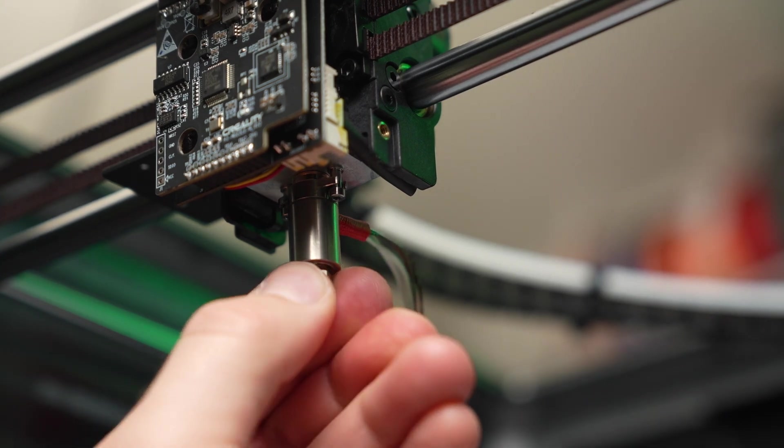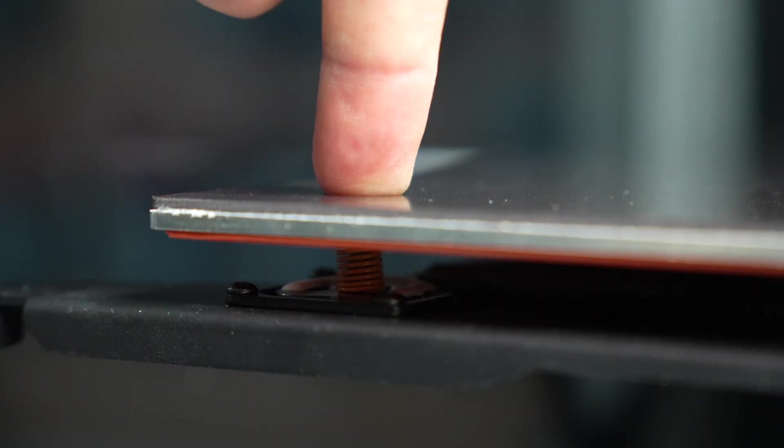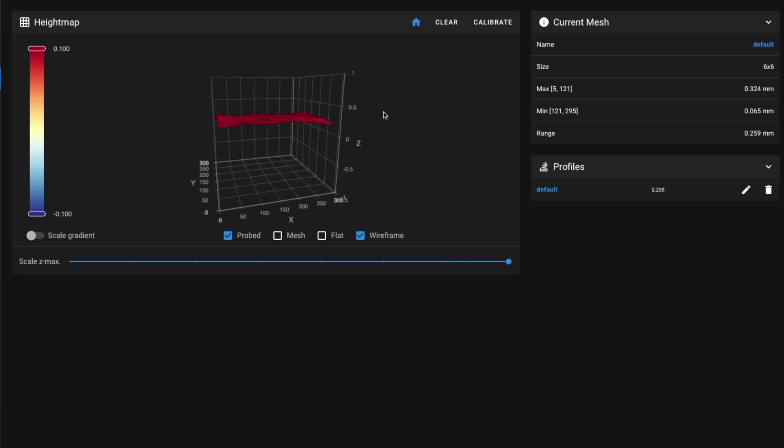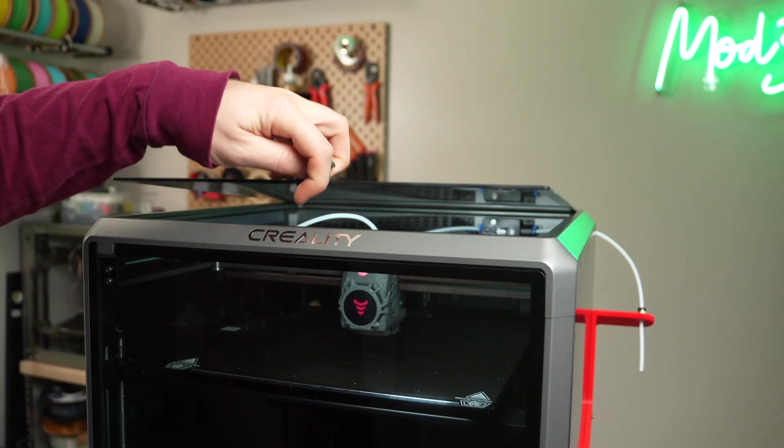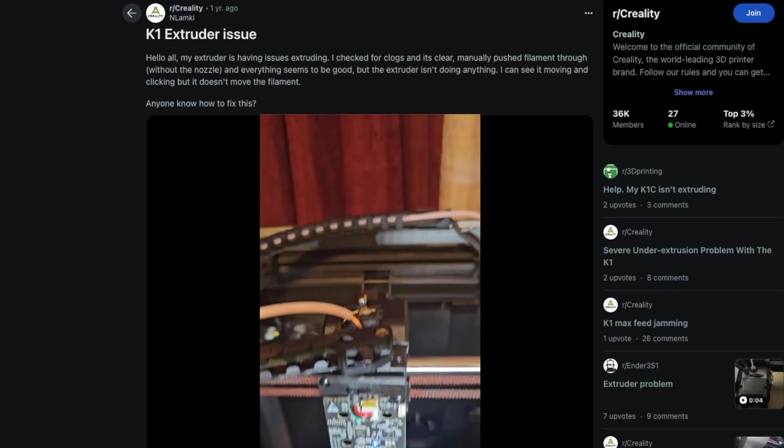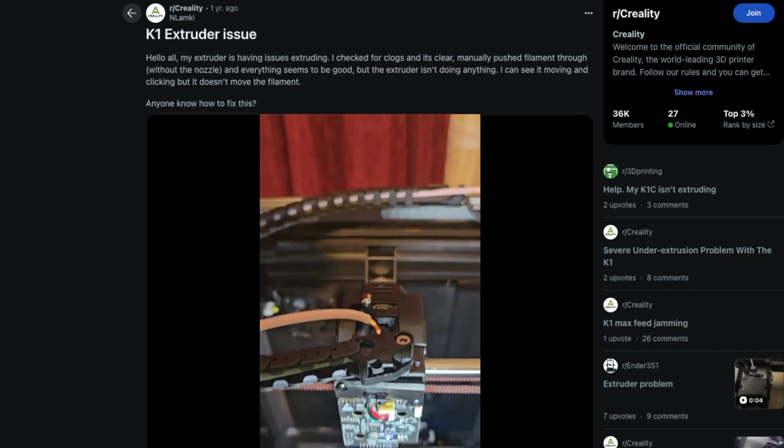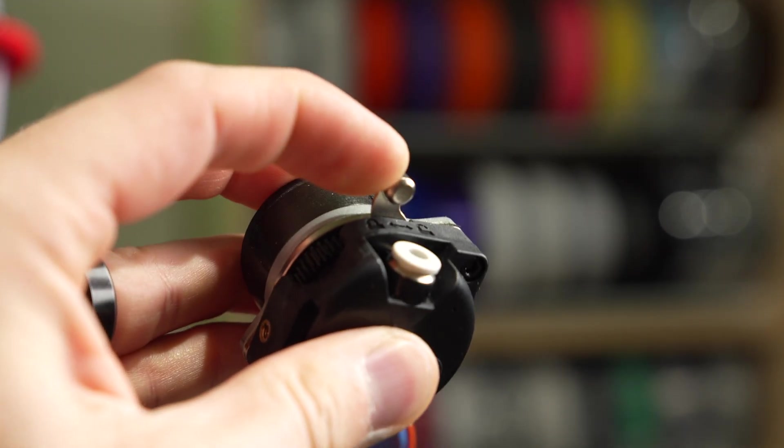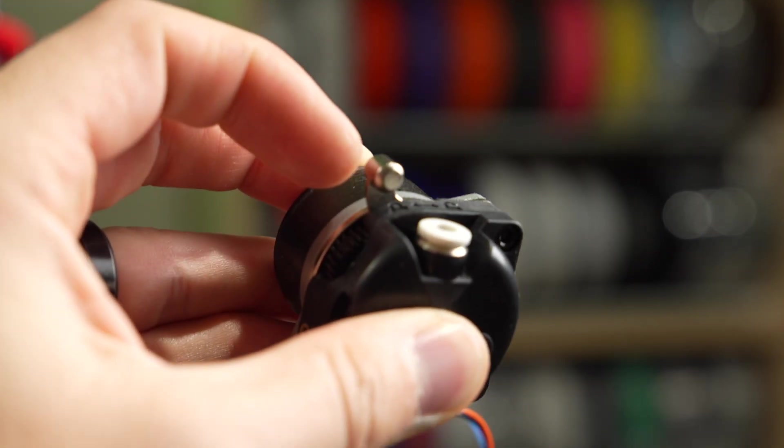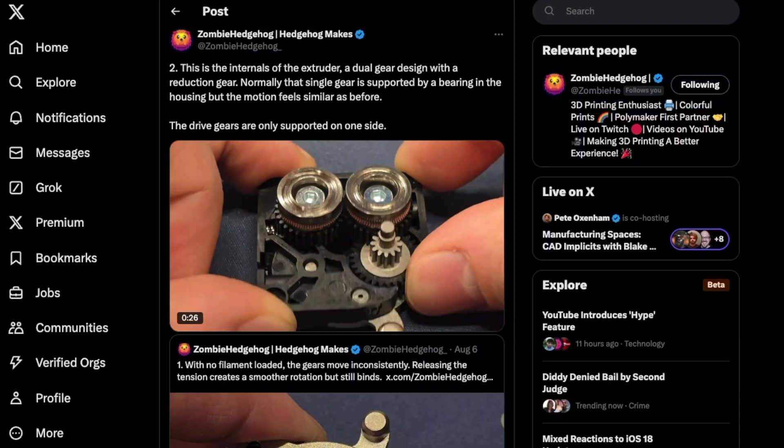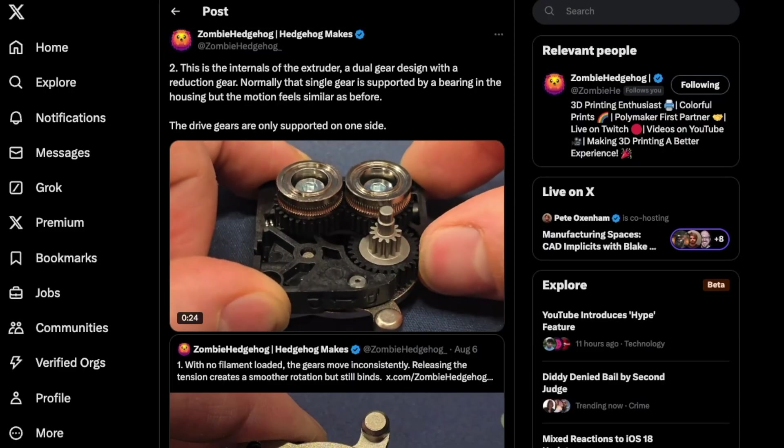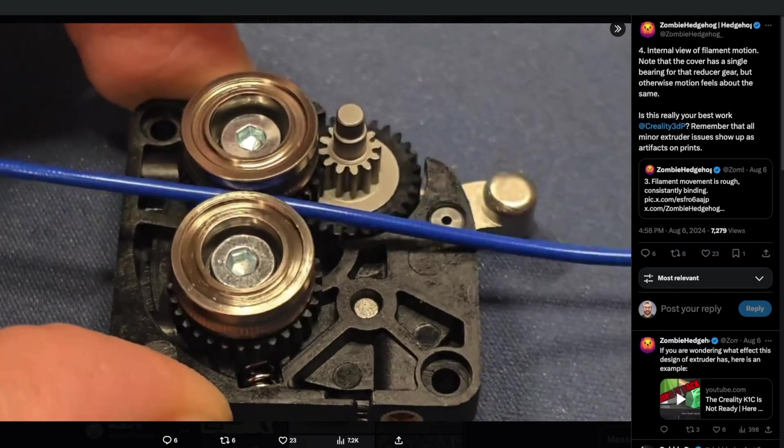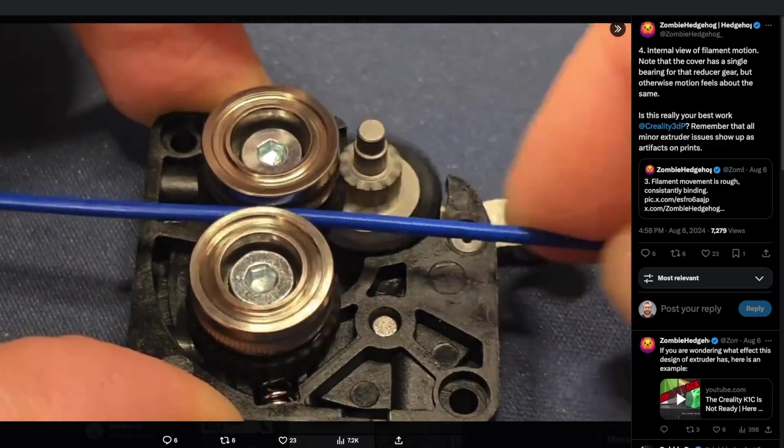So far, we upgraded the hotend to the Micro Swiss Flowtech and added stiff springs to the bed, which majorly increased the printer's overall reliability, but there's always room for additional improvements. Upon release, Creality made a few revisions to their faulty extruder, and while the final version is better, it still feels like a poor attempt at a Bontech LGX. There's no way to adjust tension, and when my buddy Zombie Hedgehog did some investigating into the internals, he found that there was binding caused due to the drive gears being improperly supported.